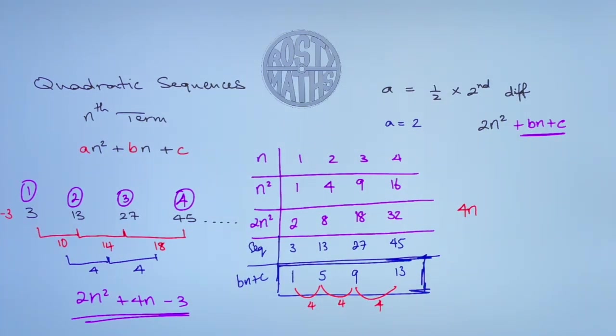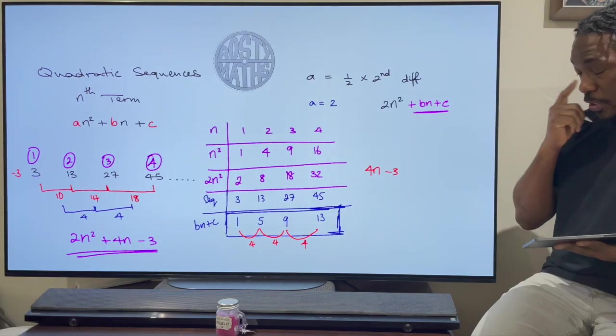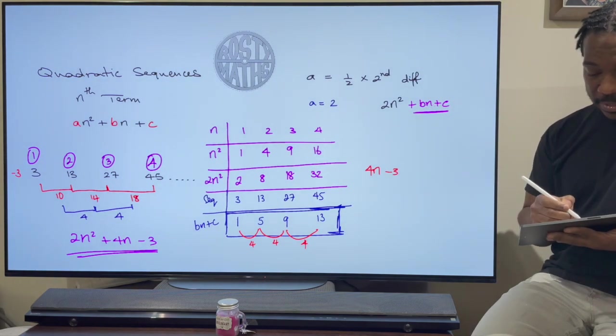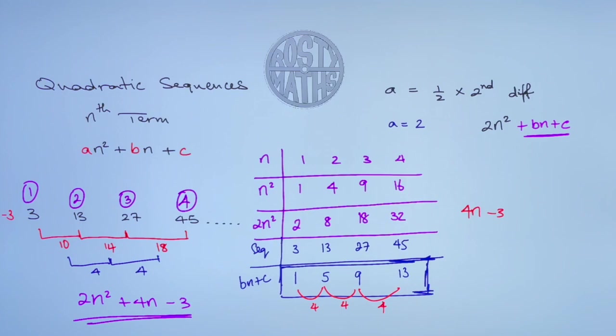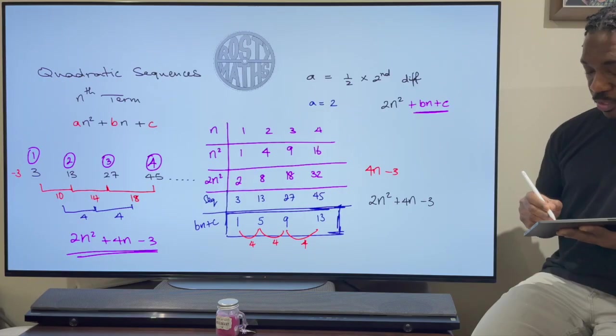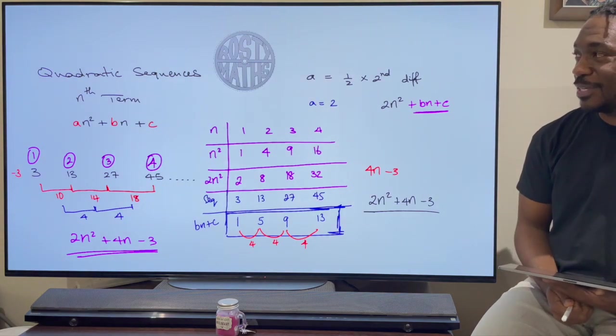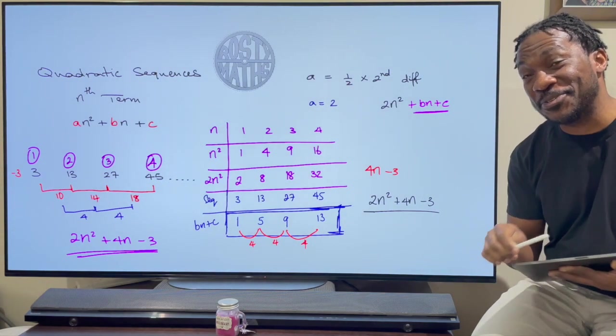What is the term that comes before that if we were adding 4? Then that's going to be minus 3. And just like that I've got my bn plus c. So together putting it all together the nth term of this sequence is 2n² plus 4n minus 3. Which is exactly the same answer we got over there. So which of the 2 methods did you like?